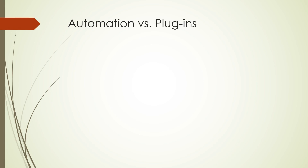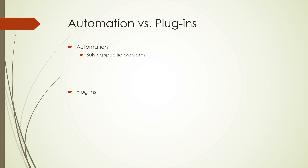Now I make a distinction between automation and plugins for several reasons. I think that they are very distinct modes of programming that require different approaches. Automation is usually used for solving specific problems — specific to the job that you're working on or specific to your company — something that probably won't have broad applications to the public at large. Plugins, on the other hand, are focused on solving more general problems that other people might have interest in. They're an easy way to distribute your solution to the broader GIS community.